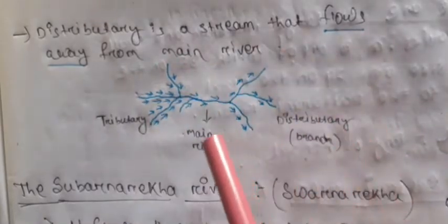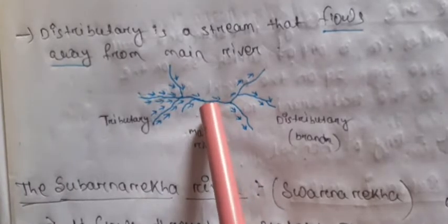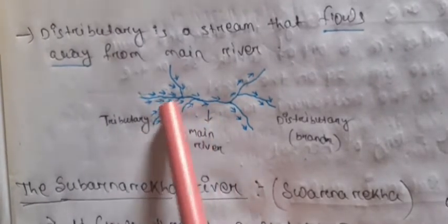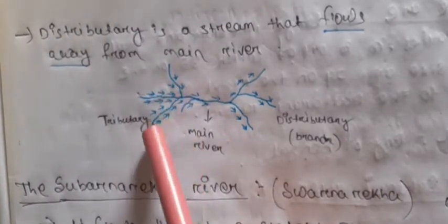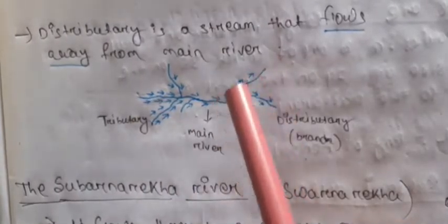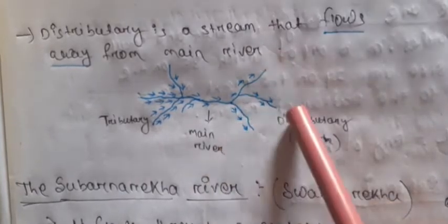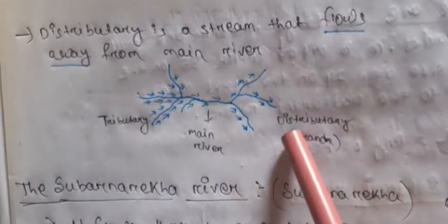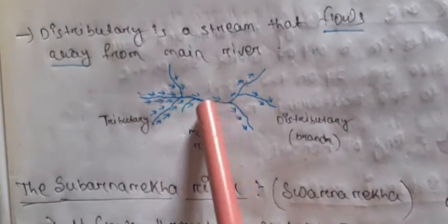Looking at the picture: this is the main river. The main river gets water from the tributary. Tributaries give water to the main river. The distributary distributes water from the main river. So rivers that give water are called tributaries and those that distribute water are called distributaries.